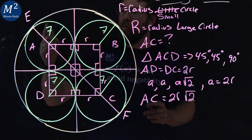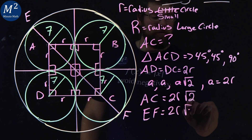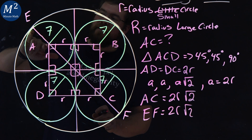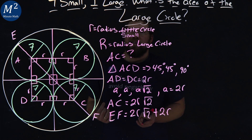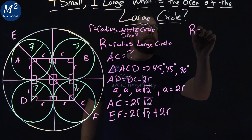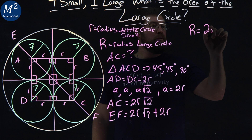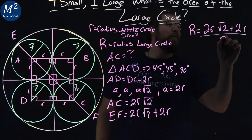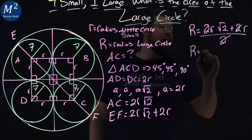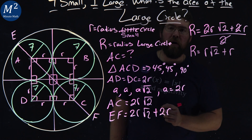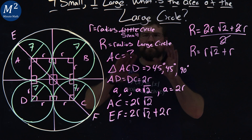So what's the length of EF? EF is equal to the length of AC, which is 2r√2, plus the two ends — just a radius and a radius — so it's plus 2r. Now, EF is our diameter, so the radius of the big circle is half of that: big R equals r√2 plus r.